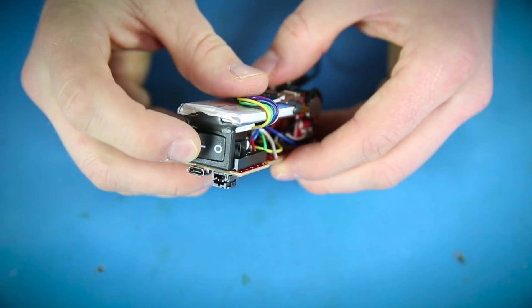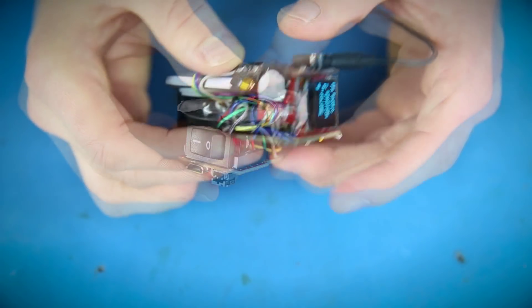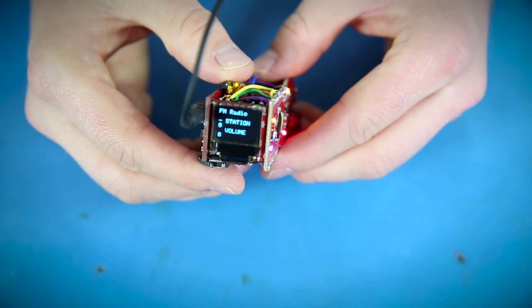To use it, all we have to do is plug in some headphones. This acts as our antenna. Then there's a rocker switch in the back. Turn that on. Flip it around, and you will see an OLED screen.